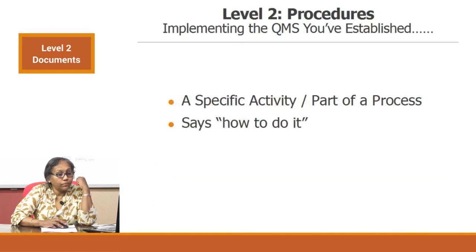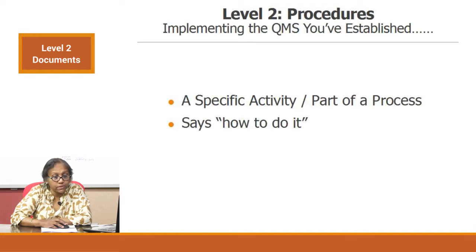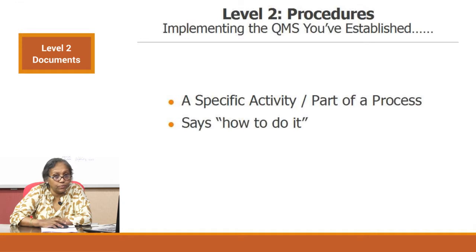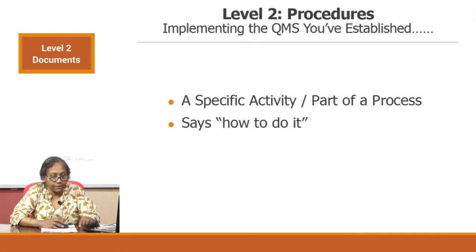To recap: the implementing level 2 documents are the procedure documents, and they are used for the implementation of the QMS that the management has established. All these procedures talk about one specific activity per document, and that becomes part of a full process. Each of the procedures will tell the technician or a frontline worker how to do a certain activity.